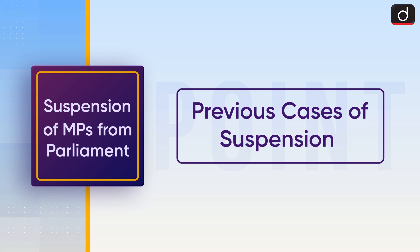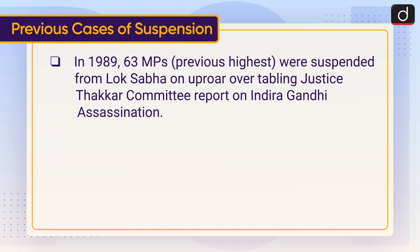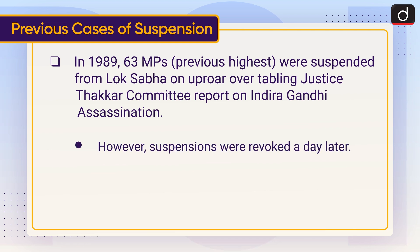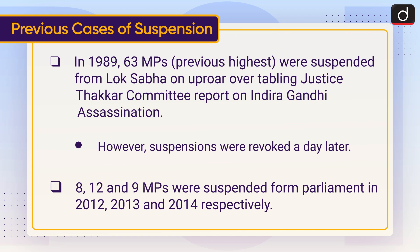Now let's discuss previous cases of suspension. In 1989, the previous highest — 63 MPs — were suspended from Lok Sabha over uproar regarding the tabling of the Justice Thakkar Committee report on Indira Gandhi's assassination; however, suspensions were revoked a day later. 8, 12, and 9 MPs were suspended from parliament in 2012, 2013, and 2014 respectively.